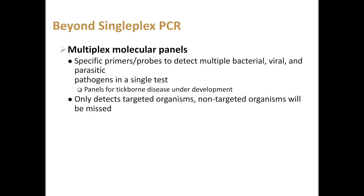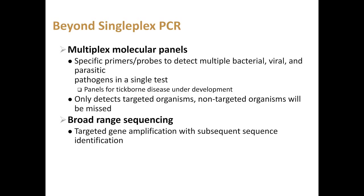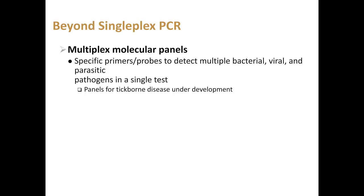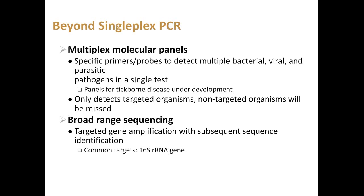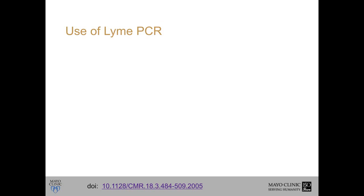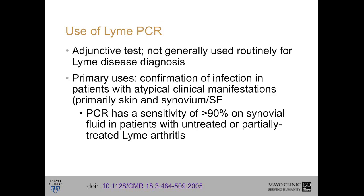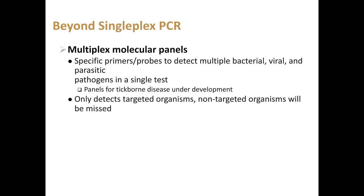The problem with multiplex panels is that you're still using specific primers and probes, so you'll only detect the organisms you're targeting and non-targeted organisms will be missed. This is partially overcome by broad-range sequencing, where you sequence a specific gene covering a range of organisms. For example, the 16S rRNA gene is common to most bacteria — if you amplify that gene and then sequence what's been amplified, you can detect a number of different organisms. This is a promising approach one step beyond multiplex molecular tests.